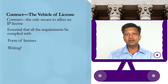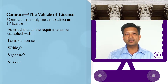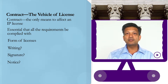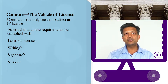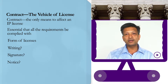Certain statutes also require, in addition to writing, the requirement of signatures. Normally no notice of the contract is required to be given to any party. As far as registration is concerned, some intellectual property statutes require registration and some make it optional. Even if a particular intellectual property statute has no mechanism for the registration of a particular license, as a legal document it can always be registered under the Registration Act of 1908.